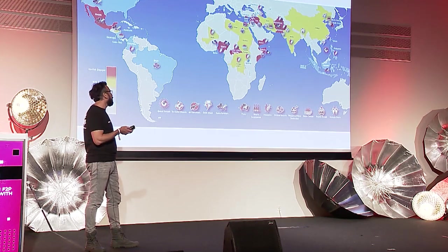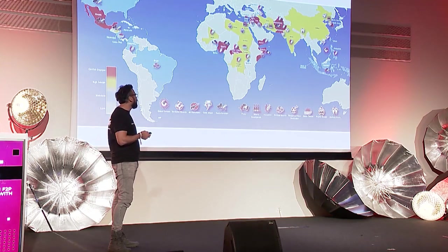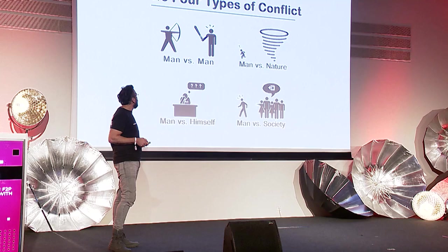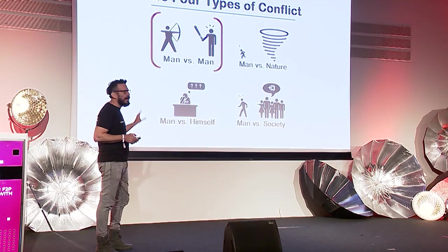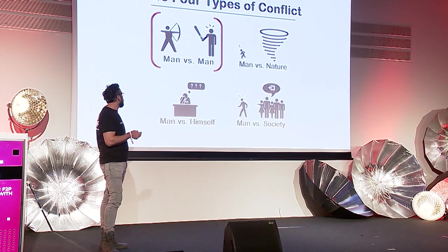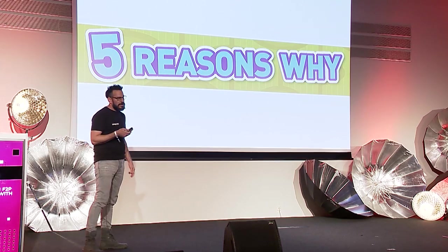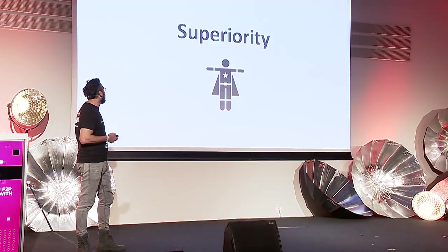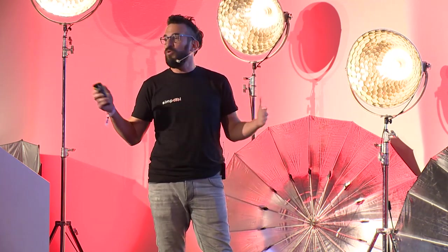I'll speak mostly about a man-versus-man type of conflict, not man-versus-nature, which is mostly typhoons and the sorts. Let's speak about the reasons for a conflict. I'll start with superiority — groups that believe they are above others, that they are special, they have special powers, they were the chosen ones. The KKK is a good example of white supremacy based on skin color.